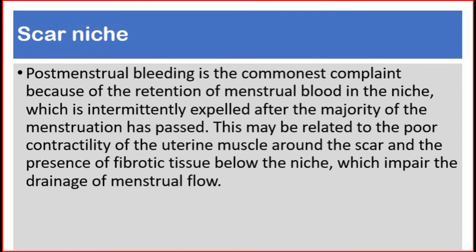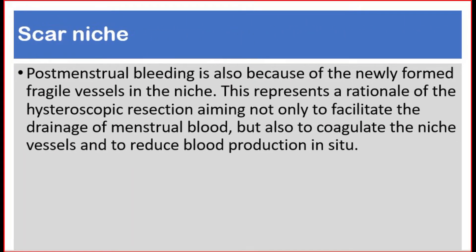Post-menstrual bleeding is a common complaint because of the retention of menstrual blood in the niche, which is intermittently expelled after the majority of menstruation has passed. This may be related to the poor contractility of the uterine muscle around the scar and the presence of fibrotic tissue below the niche, which impairs drainage of menstrual flow. Post-menstrual bleeding is also caused by newly formed fragile vessels in the niche, which is the rationale for hysteroscopic resection — aiming to facilitate drainage, coagulate vessels, and reduce blood production in situ.